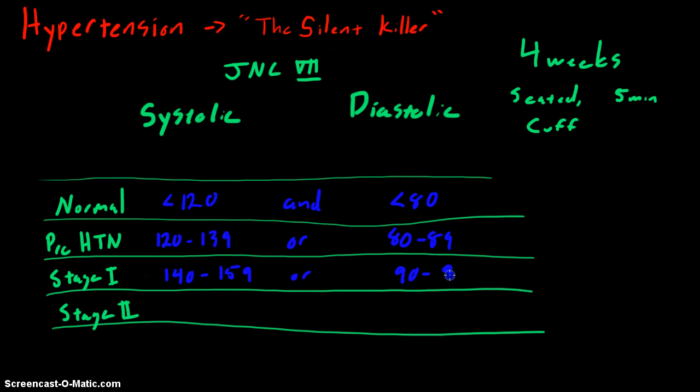Stage 2 is greater than or equal to 160 systolic or greater than or equal to 100 diastolic. Note that the units are millimeters of mercury.